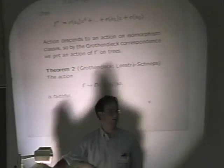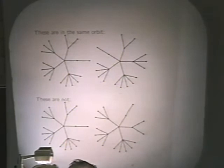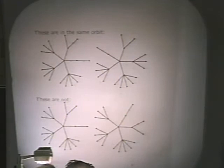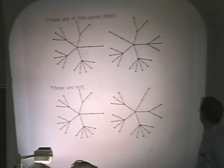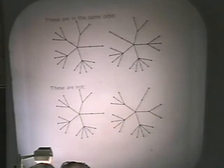Here are two trees, and it turns out that these two are in the same orbit. This one is the same as this one, but these two are in different orbits. We would like a mechanism for determining when two trees are in the same Galois orbit or when they're in different ones. We'd like some invariants, and I'll discuss that shortly.